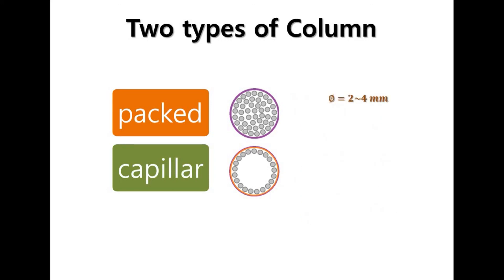Packed and capillary columns have different diameters. Packed column has a bigger diameter compared to capillary column. Capillary column is much longer than a packed column, so maximum 100 meters.